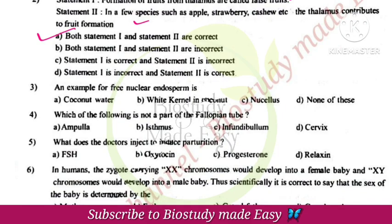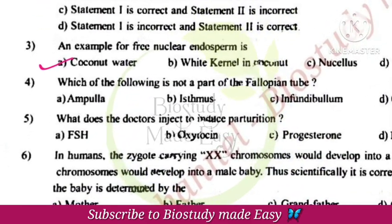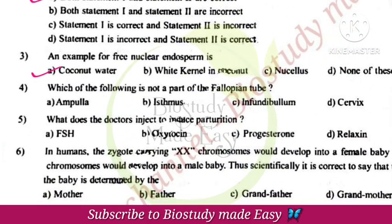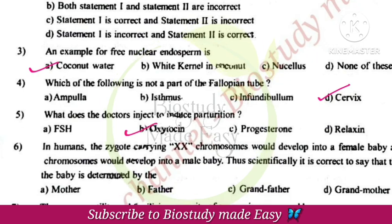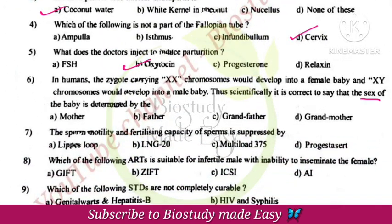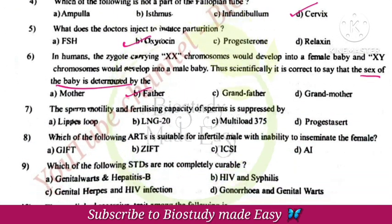Example for free nuclear endosperm is coconut water. Which of the following is not a part of the fallopian tube? That is cervix. What does doctors inject to induce parturition? Oxytocin. The sex of the baby is determined by the father.